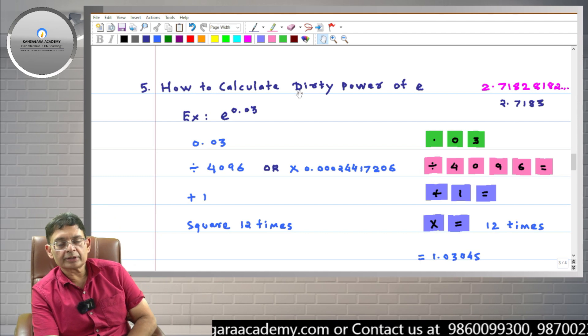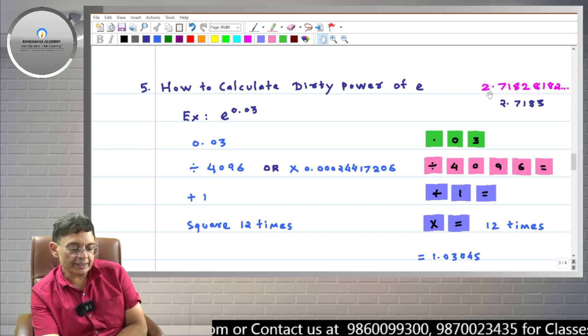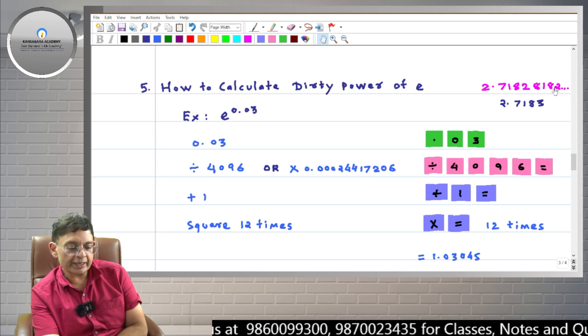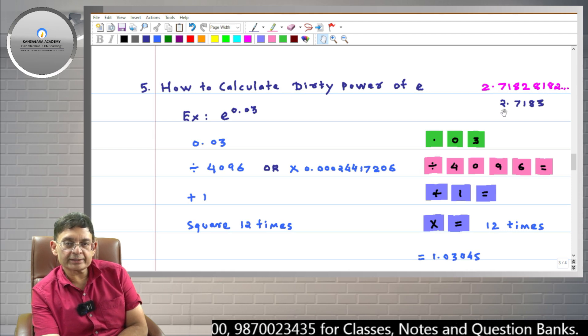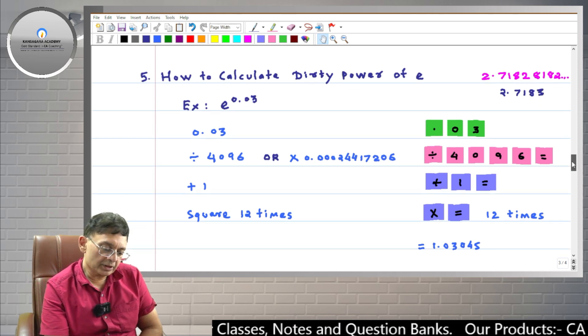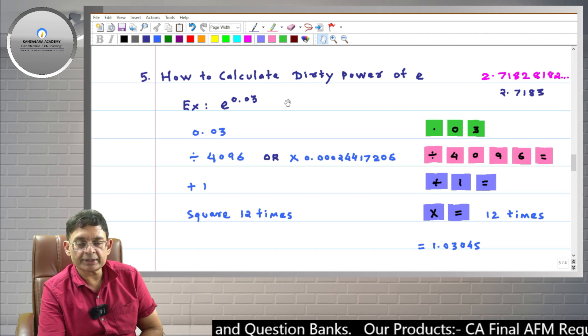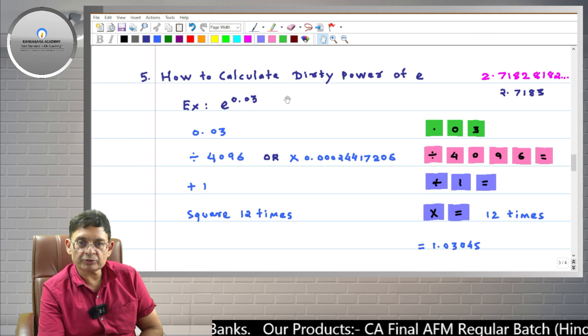Friends, E is a mathematical constant. Its value is approximately 2.71828182 and so on. But for you, up to 4 decimals accuracy, it will be 2.7183. Now friends, particularly CA final students when they solve sums in the derivatives chapter need to make these types of calculations.